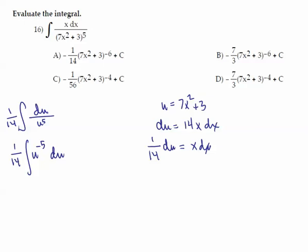We couldn't use it when it's negative one, because we increase, we get zero, divide by zero, it doesn't work. But this is going to give us 1/14, increase by one, so it's u to the negative fourth, divided by negative four.